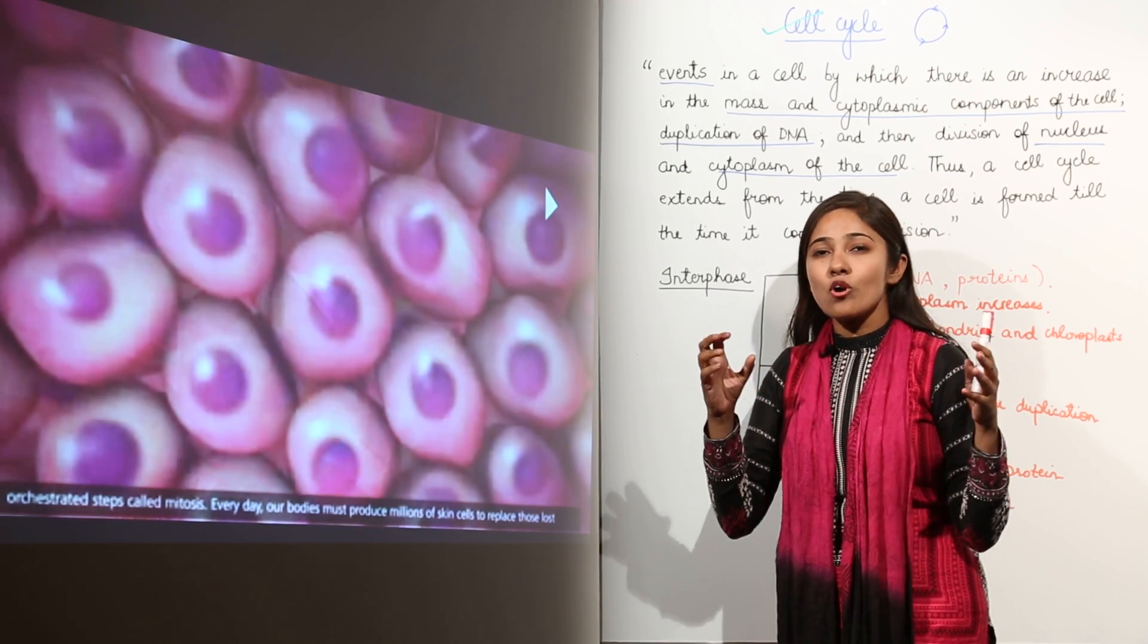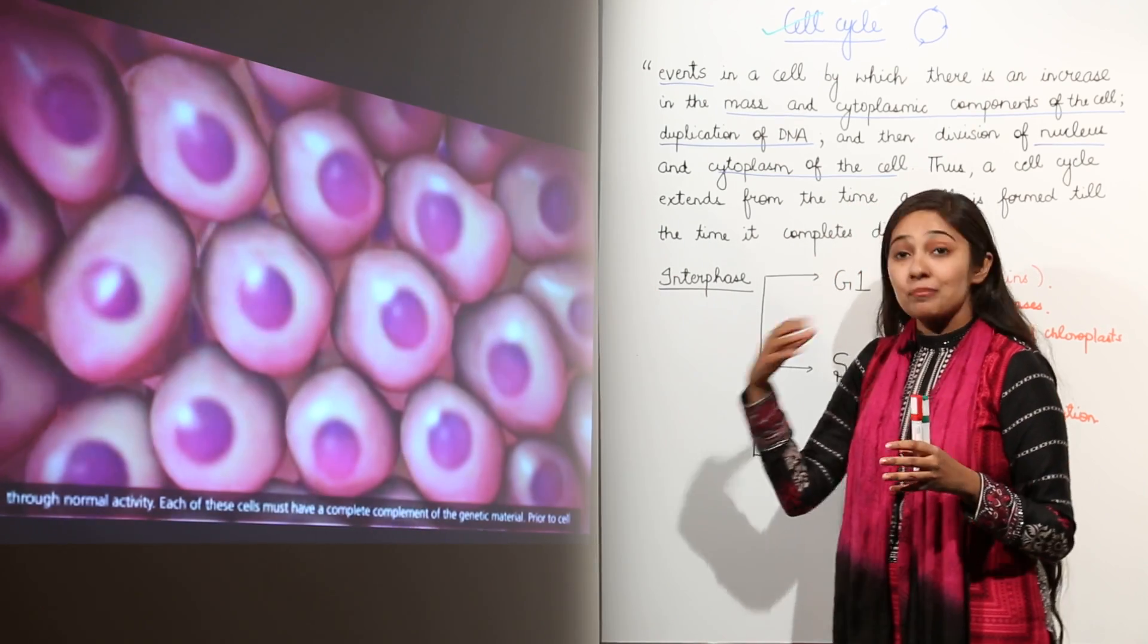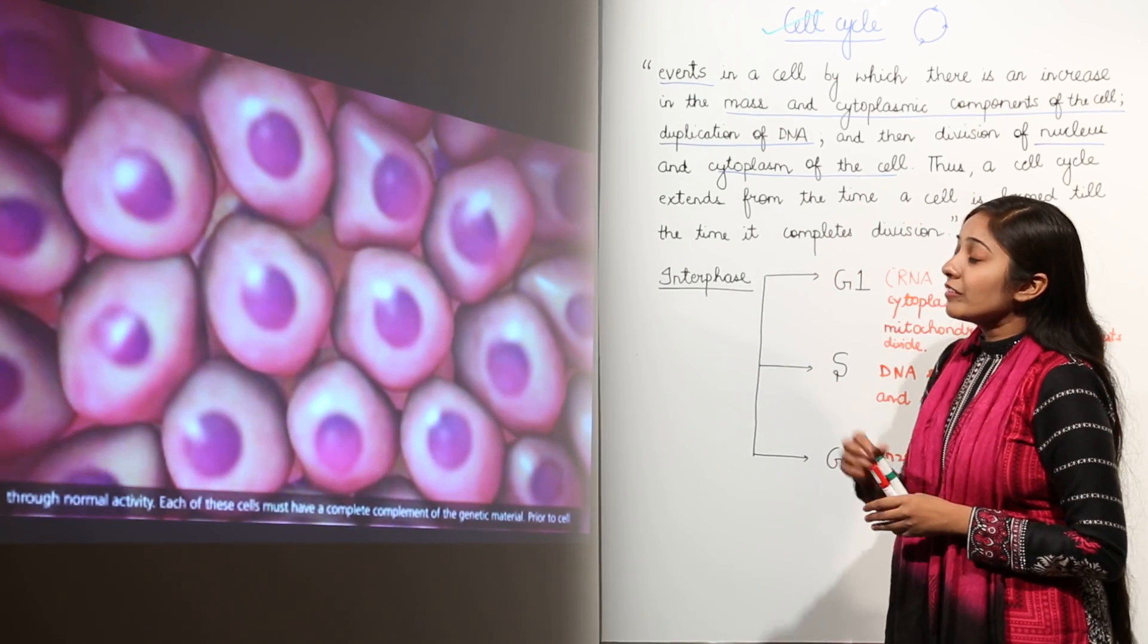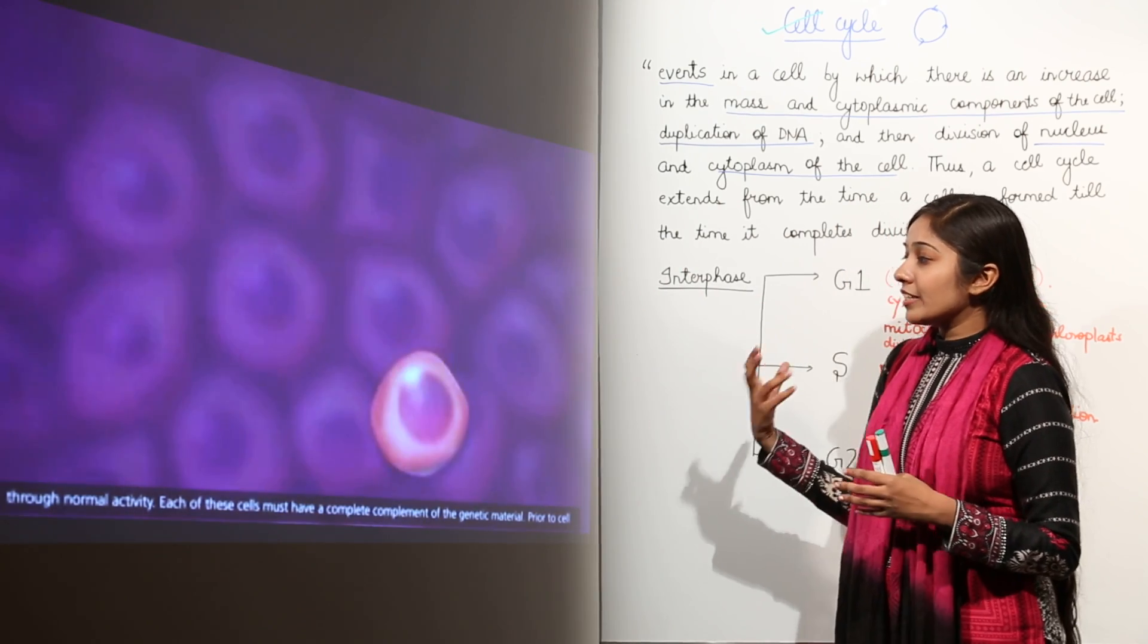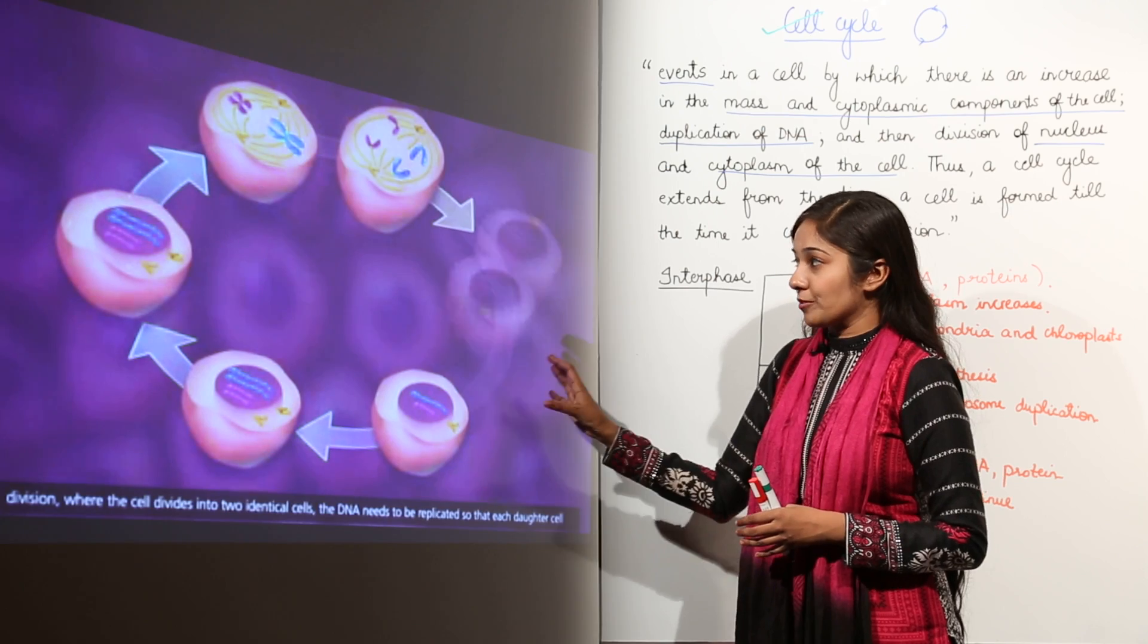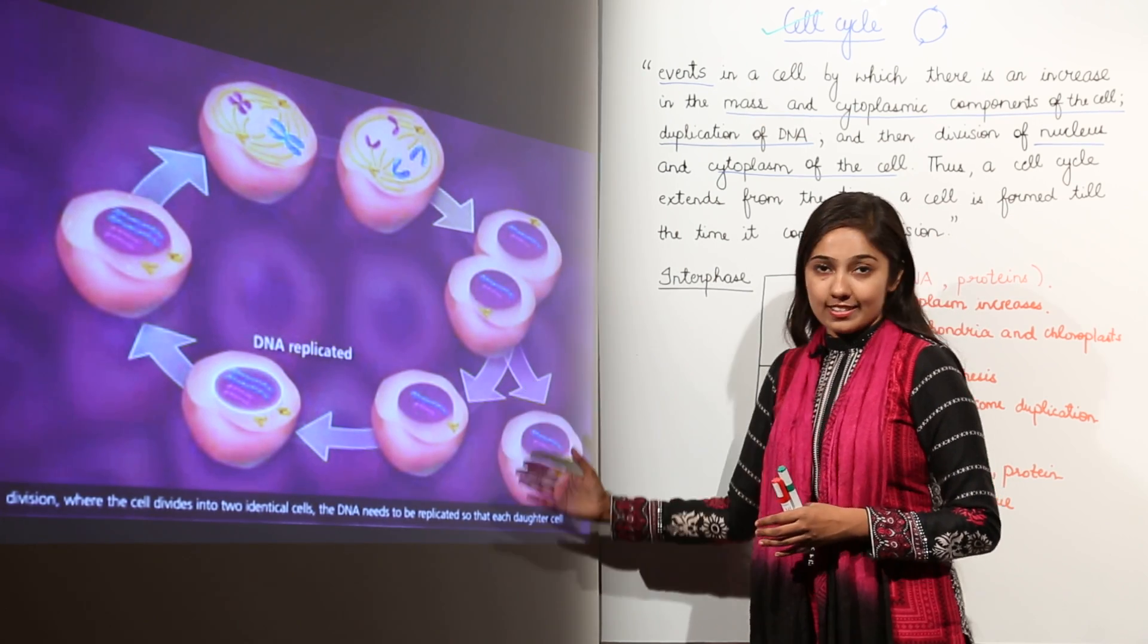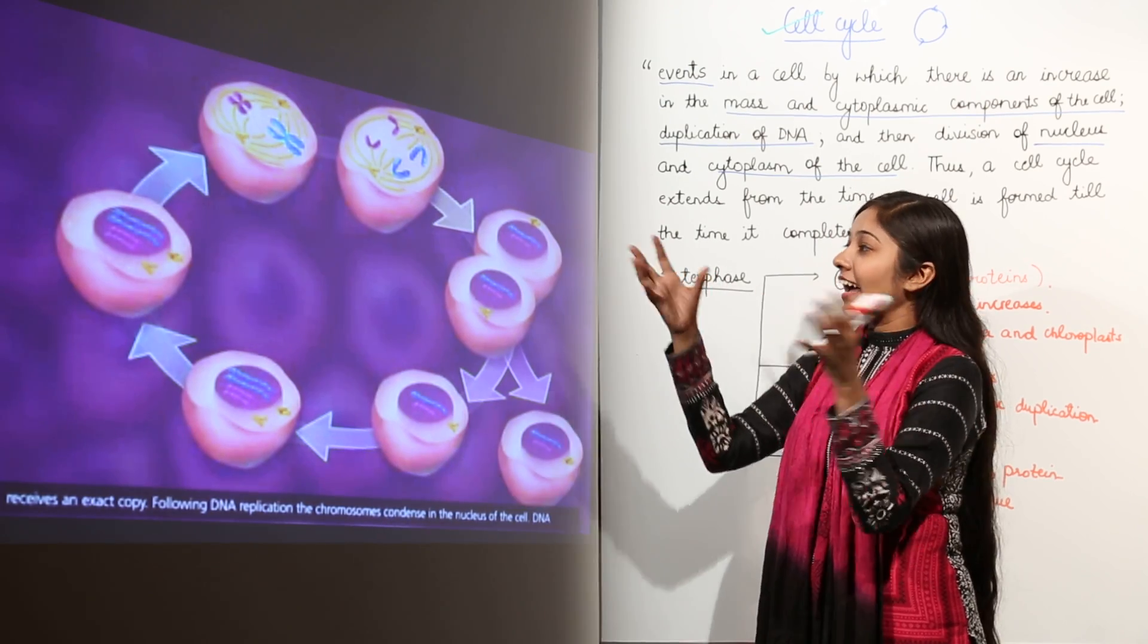As you all know, we have millions of cells in our body which continuously divide for growth and repair of our body. And when we talk about division of cells, what is the major event? The major event during cell division is DNA replication. This DNA replication produces two daughter cells that further divide again and again.